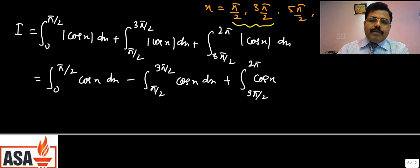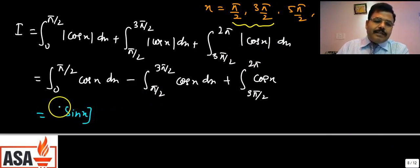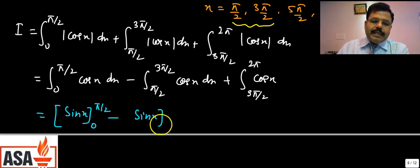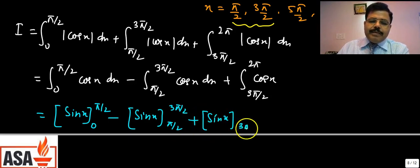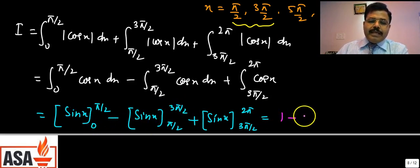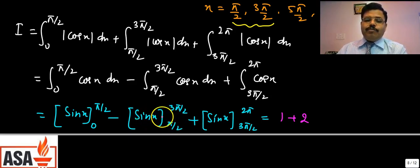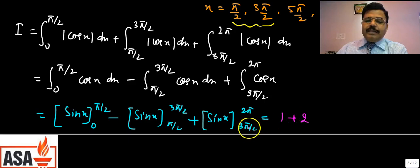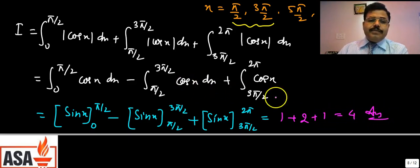So I = ∫₀^(π/2) cos x dx - ∫_(π/2)^(3π/2) cos x dx + ∫_(3π/2)^(2π) cos x dx = [sin x]₀^(π/2) - [sin x]_(π/2)^(3π/2) + [sin x]_(3π/2)^(2π). This gives (1 - 0) - (-1 - 1) + (0 - (-1)) = 1 + 2 + 1 = 4 units. So the answer is 4.